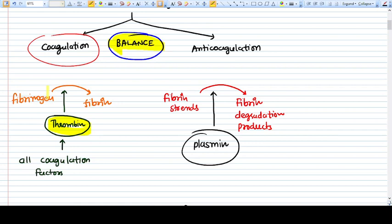What is anticoagulation? In anticoagulation, all the fibrin strands are degraded or cut by plasmin and converted into FDP, which is fibrin degradation products. So these two basic processes are going on simultaneously all the time.